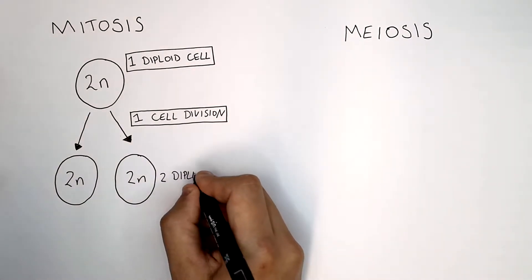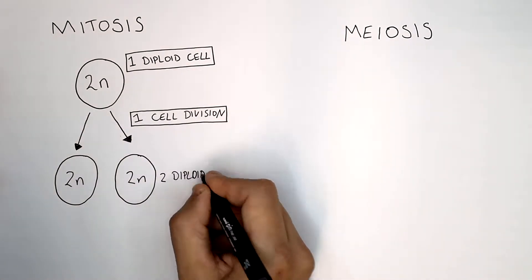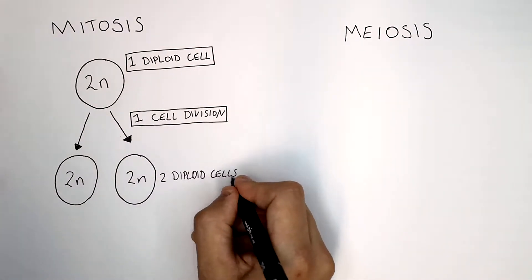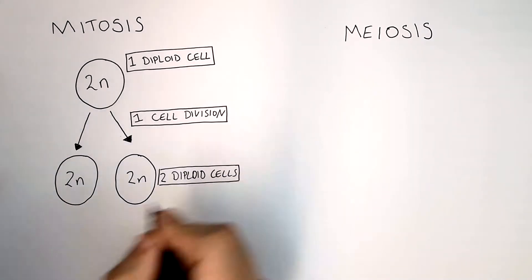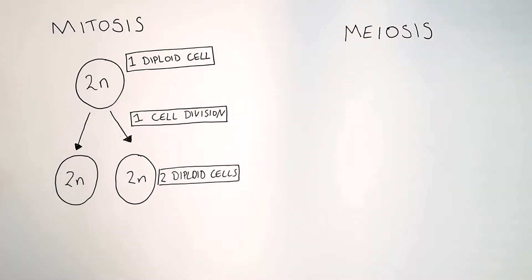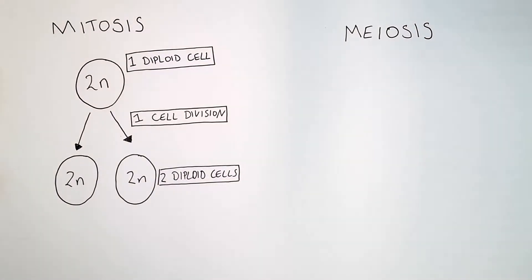These two diploid body cells are genetically identical. So mitosis is when one diploid cell divides once to form two diploid body cells that are genetically identical.